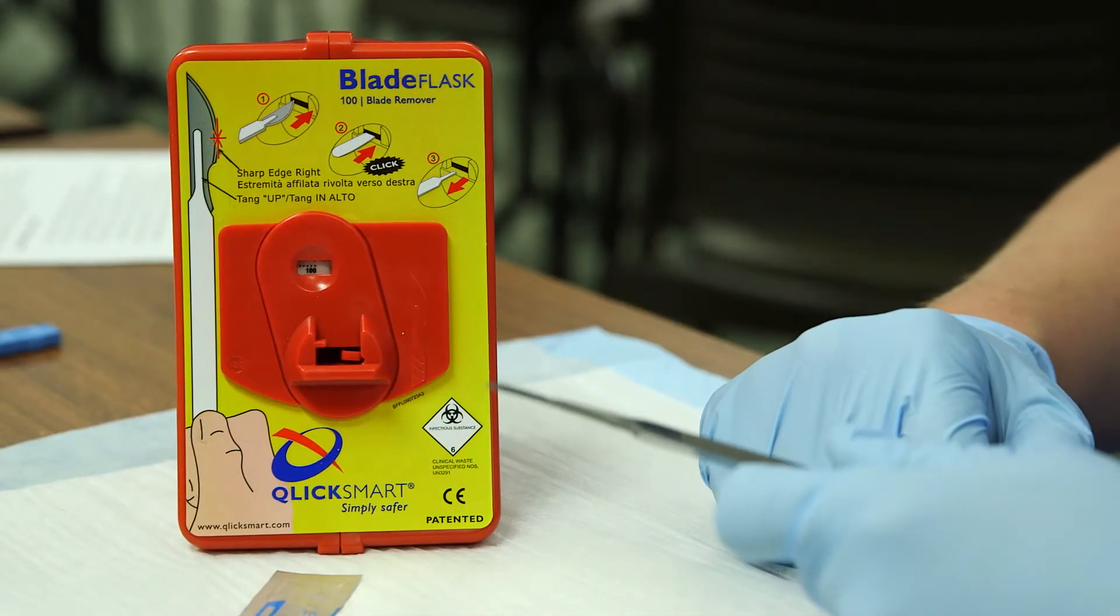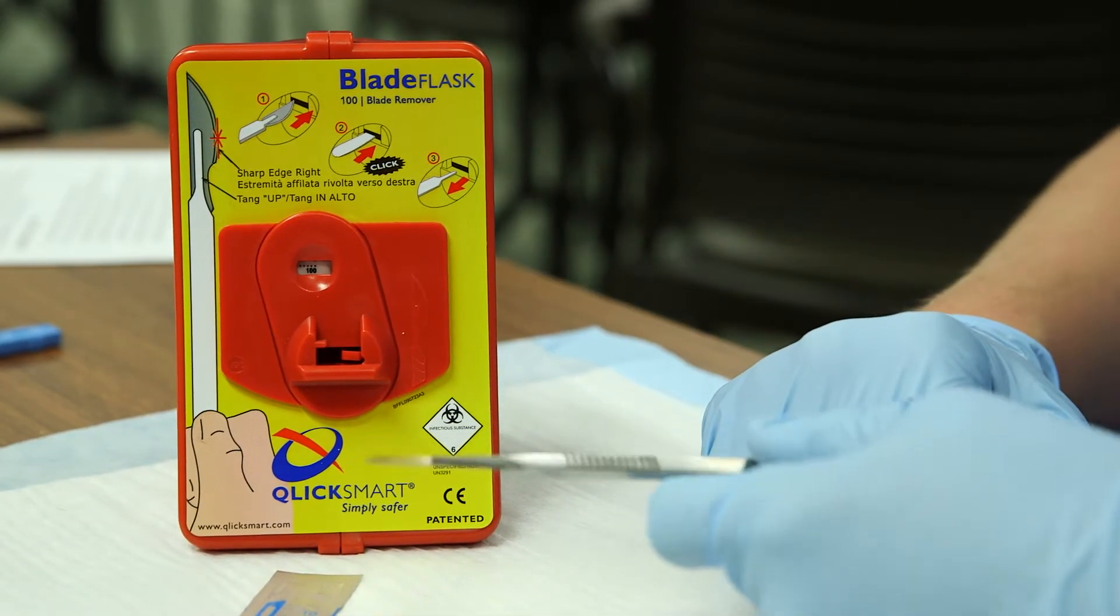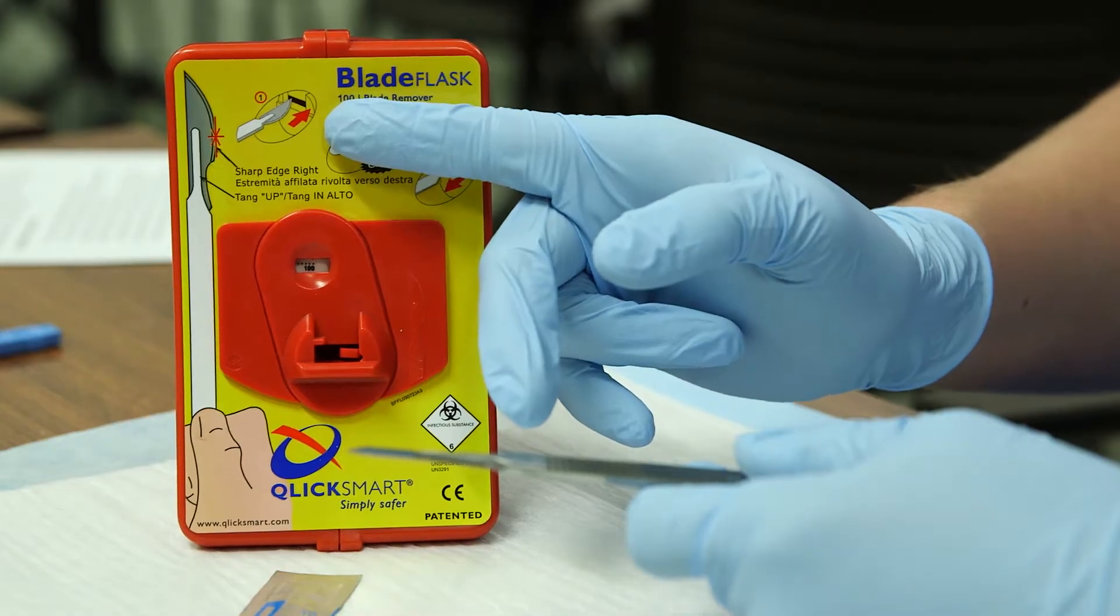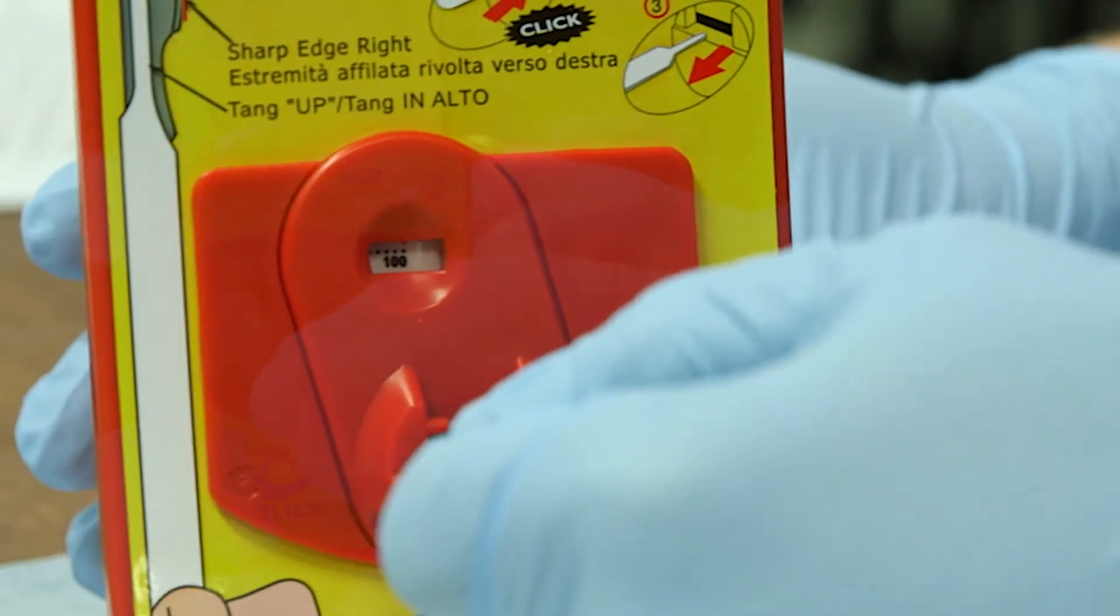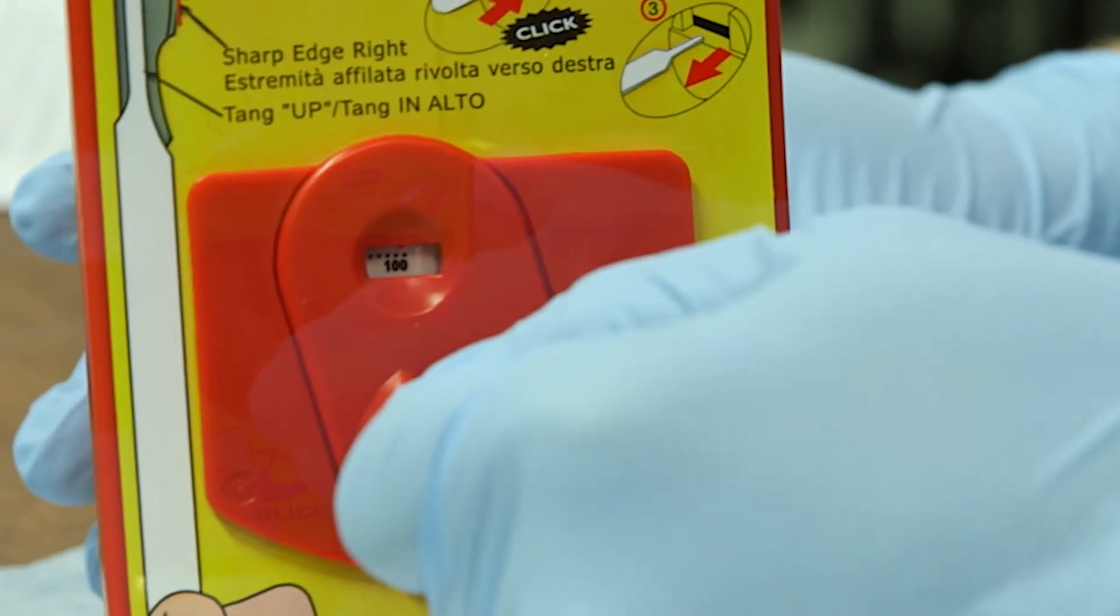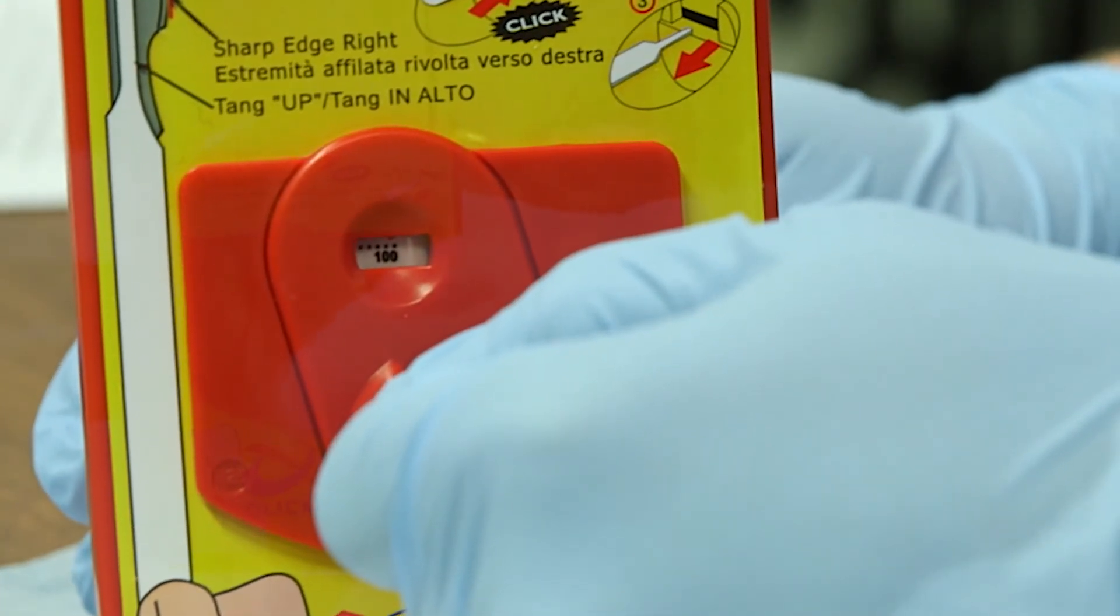To remove a blade from your scalpel, orient the blade as shown on the front of the blade flask. Push it in all the way and you will hear a click. Then pull back and you will hear the blade drop closed.